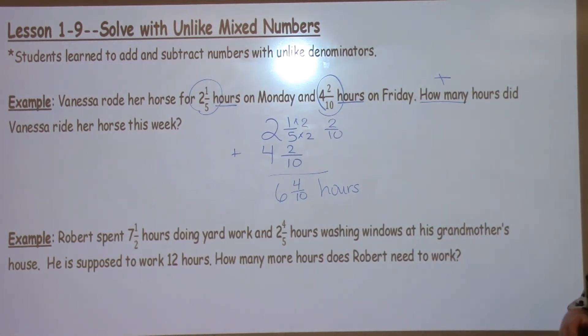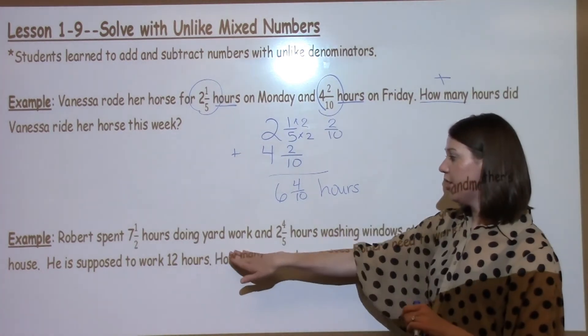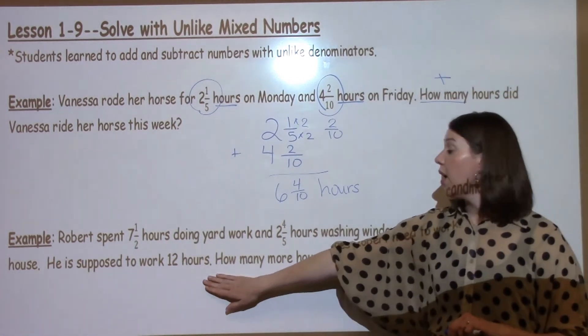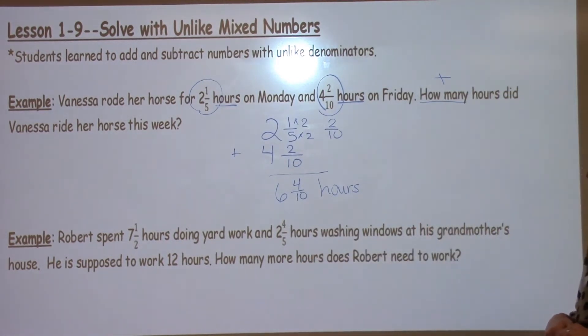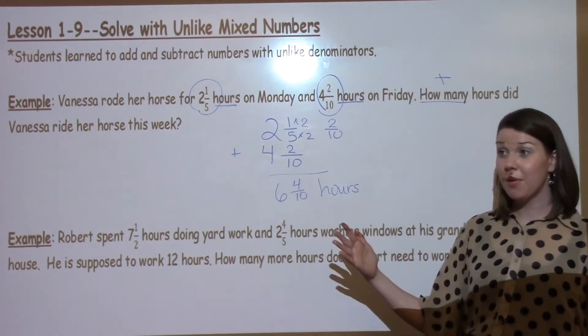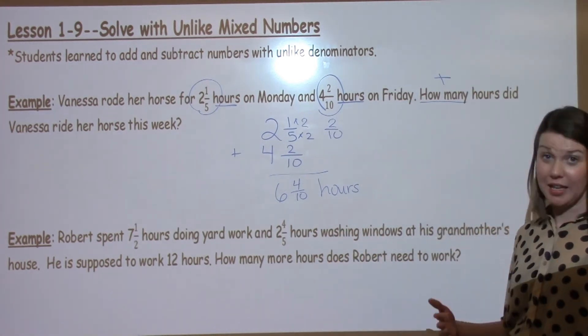The next question says, Robert spent 7 and 1 half hours doing yard work and 2 and 4 fifths hours washing windows at his grandmother's house. He's supposed to work for 12 hours. How many more hours does Robert need to work? This is actually a two-step problem. We have to figure out how much Robert has worked and then how much more he needs to work.